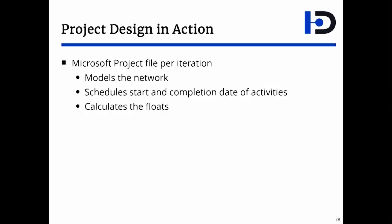For each iteration, you have a Microsoft Project file. The project file is there to model the network, to schedule the start and completion dates, to find the actual start and completion dates of activities, and to calculate the float.